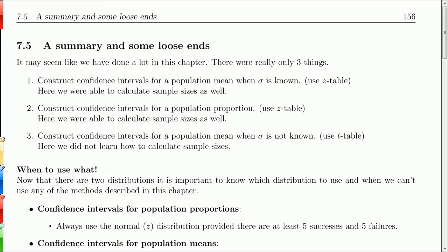It may seem like we've done a lot — we're up to chapter 7.5 already — but we've really only done three things. In chapter 7.2, we constructed confidence intervals for a population mean where sigma was known. That's pretty unlikely in practice, but it helped us get started. When this was the case, we used the z table, and we could also calculate sample sizes.